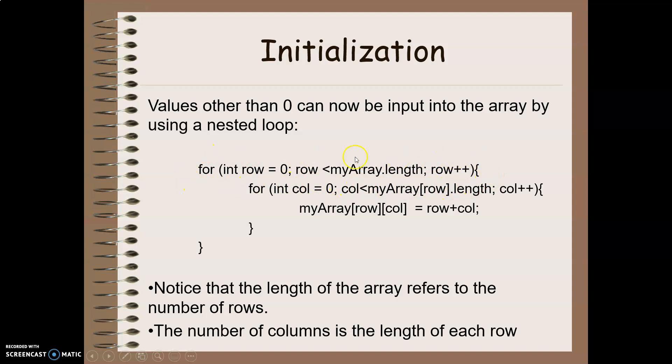So I go row zero, column zero, and I would give it a value. Row zero, column one, give it a value. Row zero, column two. Until I get through all the columns in my particular row, then I go up to the second row. So row one. Row one, column zero. Row one, column one. Row one, column two. And so on, until I finish the end.